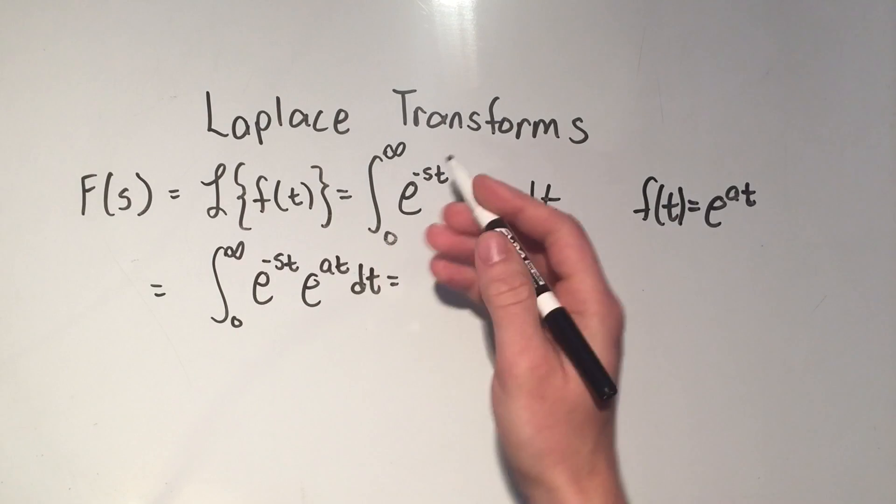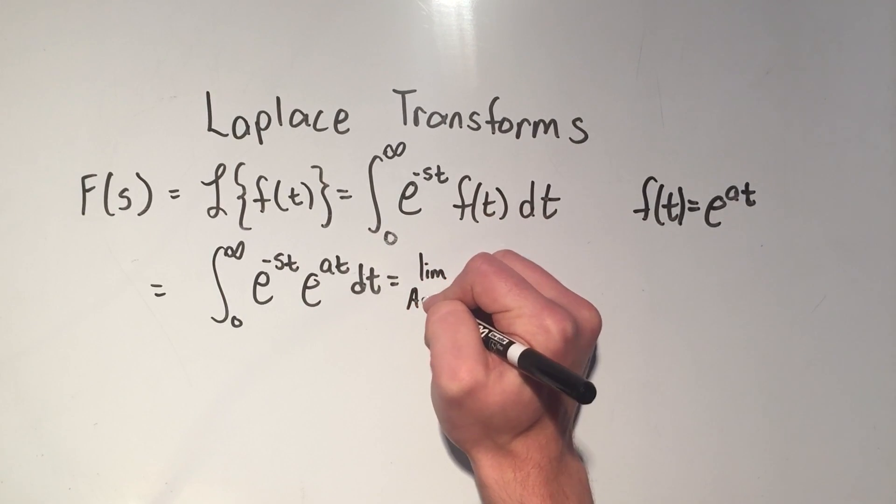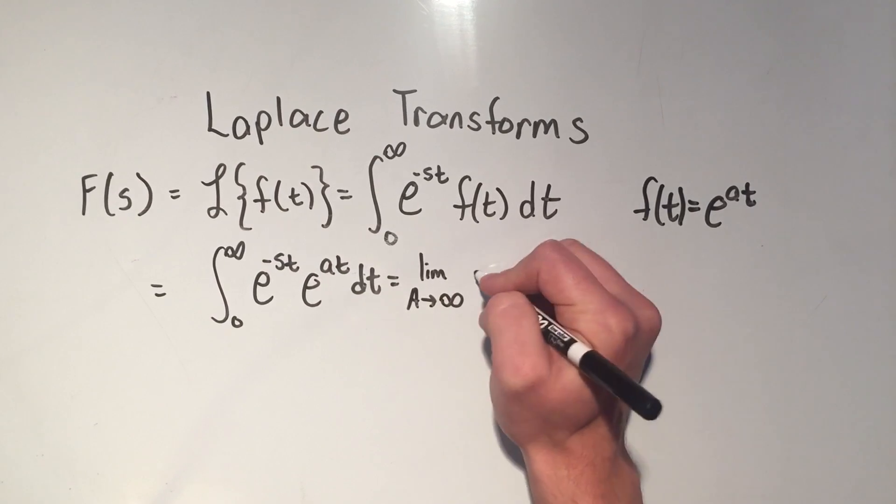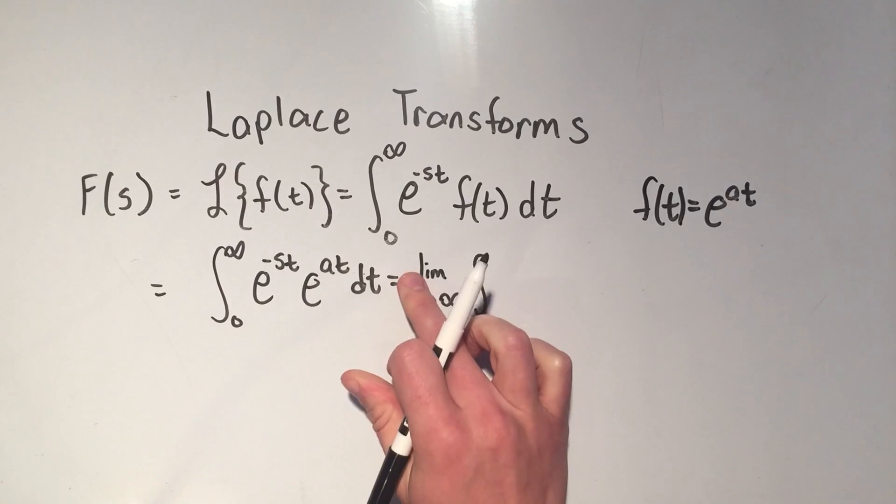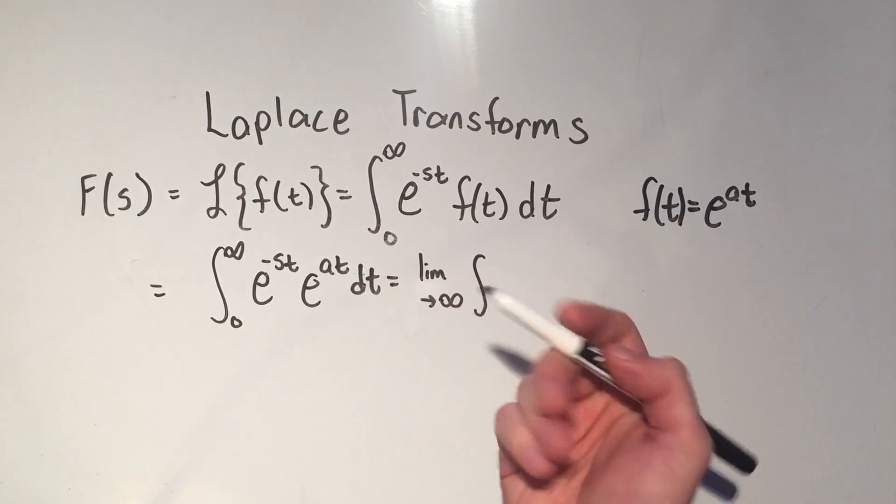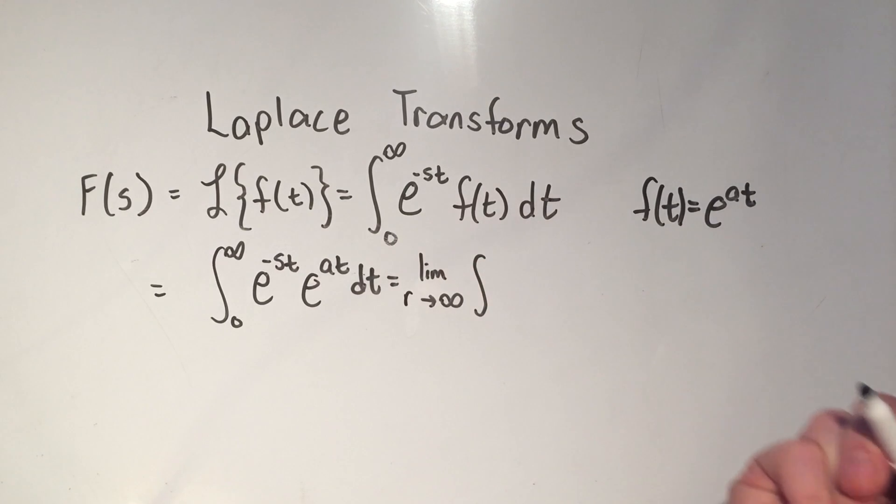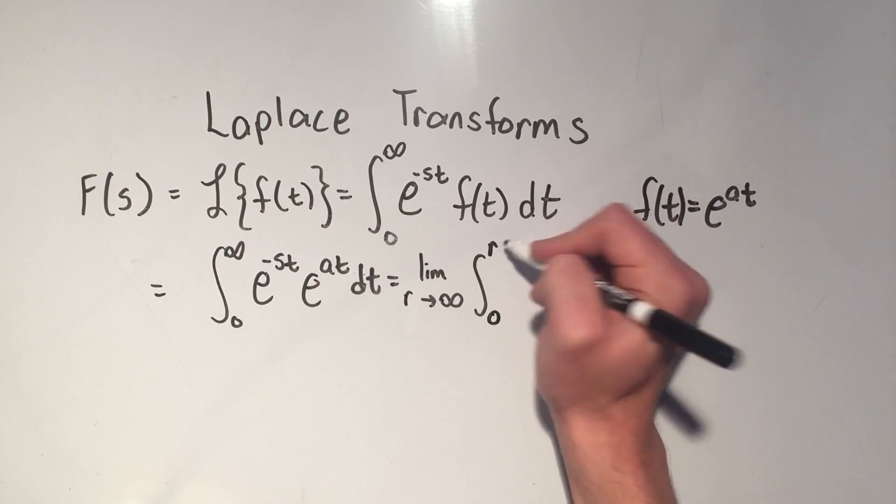To rewrite my improper integral, I'm going to do limit as, I'm just going to say r goes to infinity. I think last time I used r. It doesn't really matter what you call it. I just wouldn't use st or a. And then what did I do? I went and used a. So I better keep going with r here. So that's 0 to r.